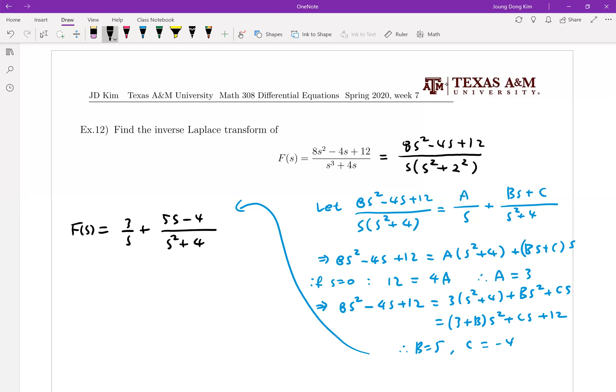For the second term we're going to do the same thing with the previous problem. We're going to split with two fractions with common denominator. So this can be written by 3/s and 5s/(s² + 4) and -4/(s² + 4).